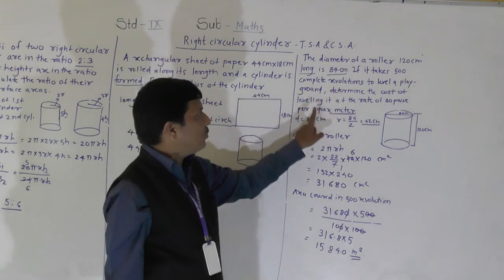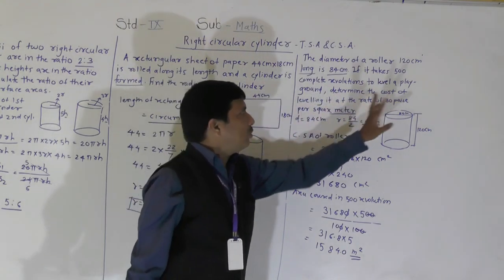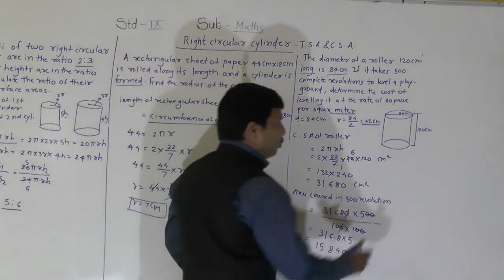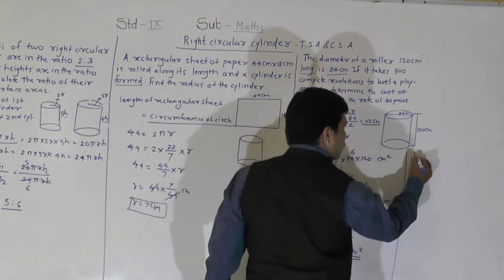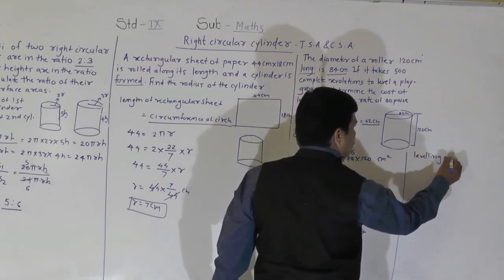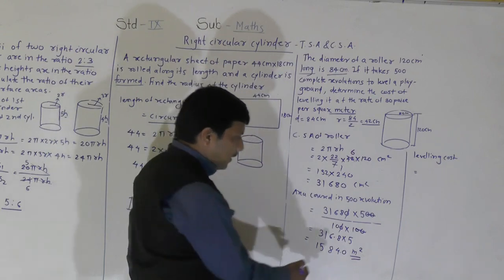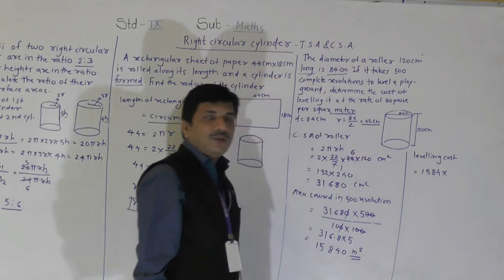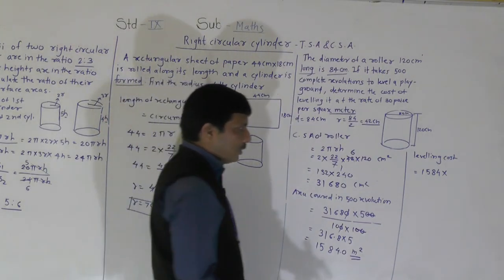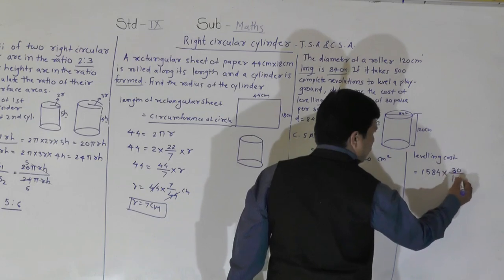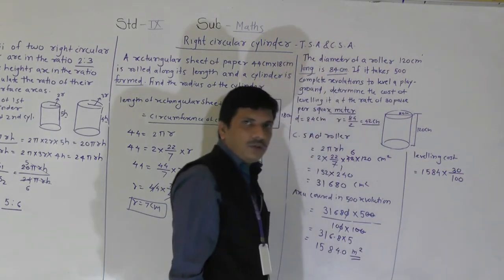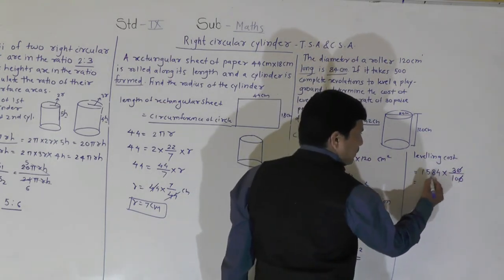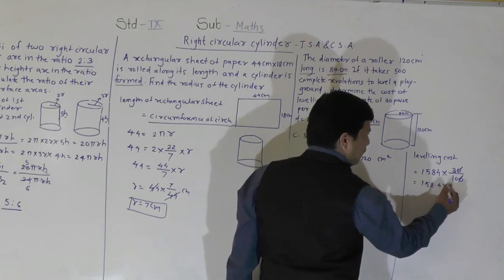Finally, we calculate the leveling cost. The rate is 30 paise per square meter, which we convert to rupees: 30/100 = 0.30 rupees. So leveling cost = 1,584 × 0.30 = 1,584 × 3 ÷ 10.